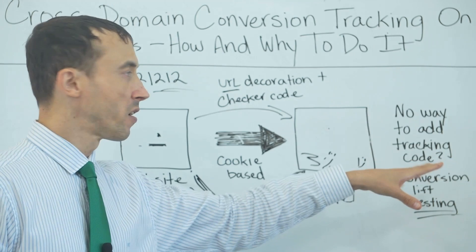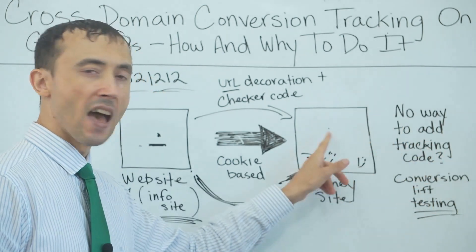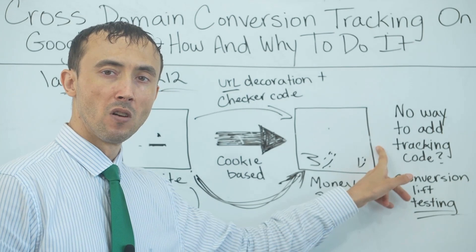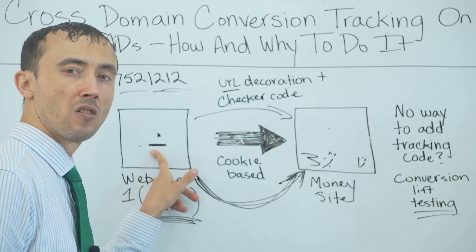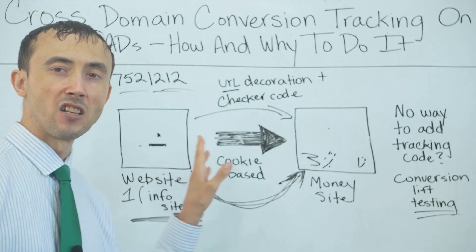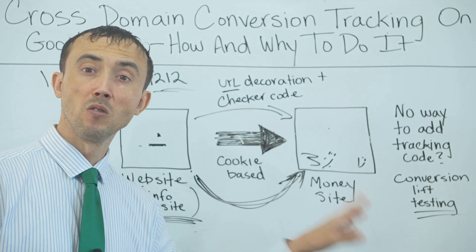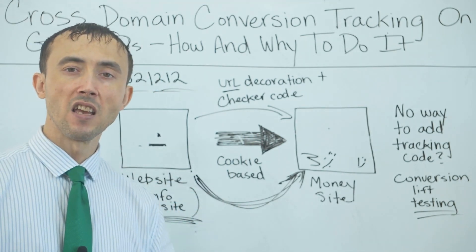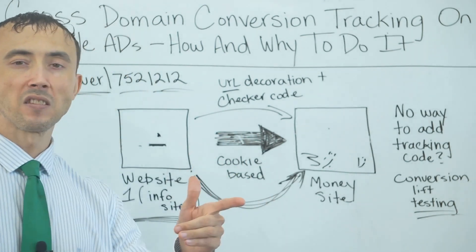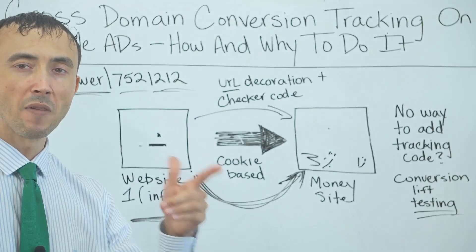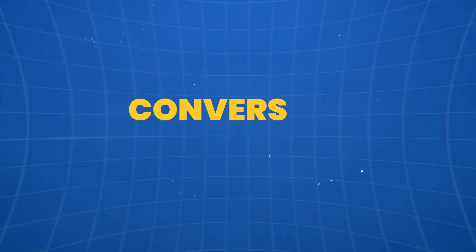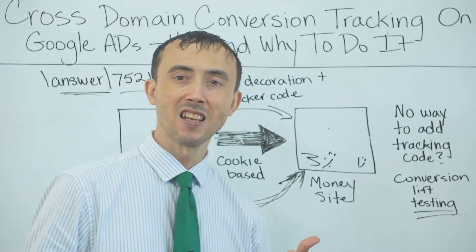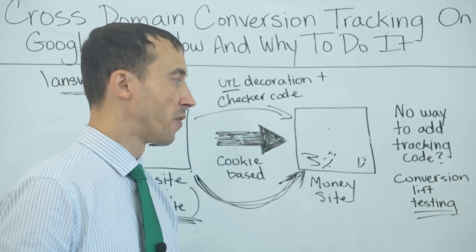If you have no way to add tracking code to your money site, or maybe you can't put code on your info site — such as when you're driving people to a YouTube video — cross-domain conversion tracking isn't available to you. The second best thing is conversion lift testing. That's not going to help you optimize your campaign, but it's at least going to tell you if it works so you can scale it up.